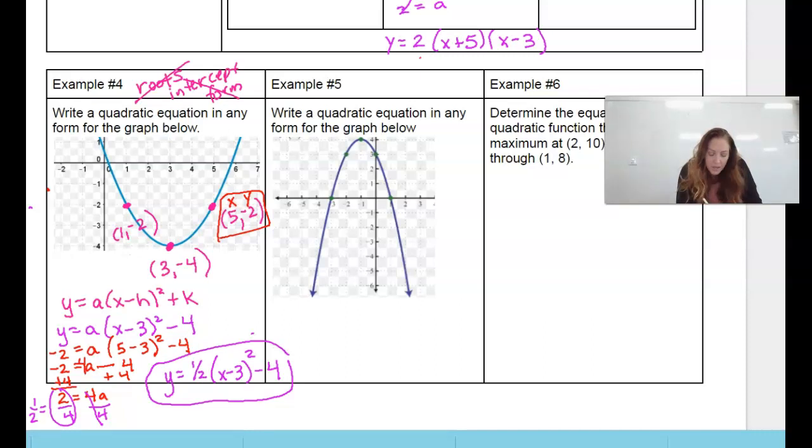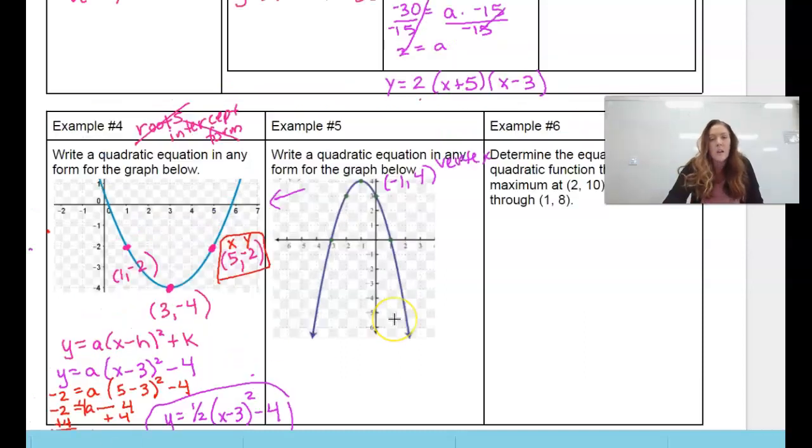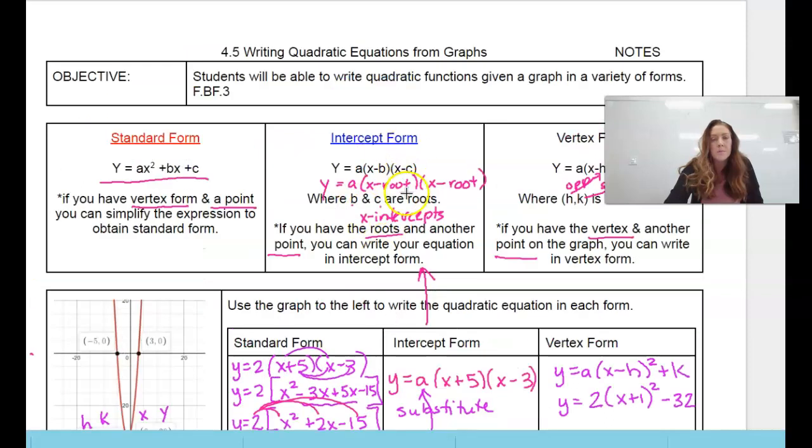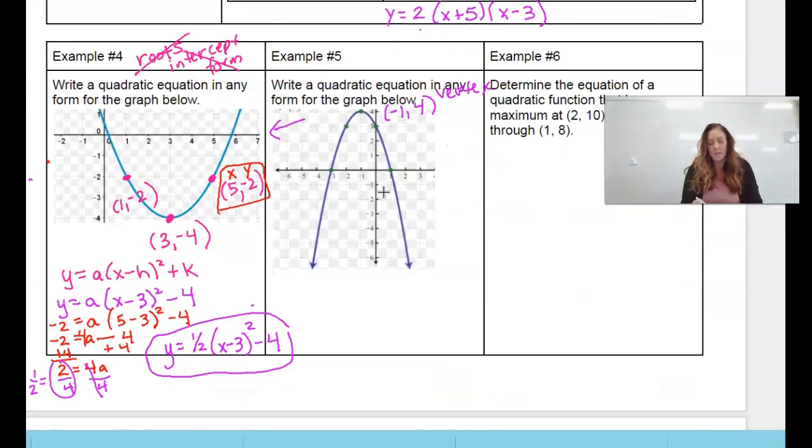All right. Let's look at example number 5. Same thing. I have the vertex. So our vertex is at negative 1, 4. This time I have the roots, and I have a point. So I can do what I just did over there. So if you want to do vertex form, we can. But now I actually have the roots, so I can use the intercept form. Vertex form or intercept form. It's a choice. I'll just go ahead and show you again how to do the one with the roots.